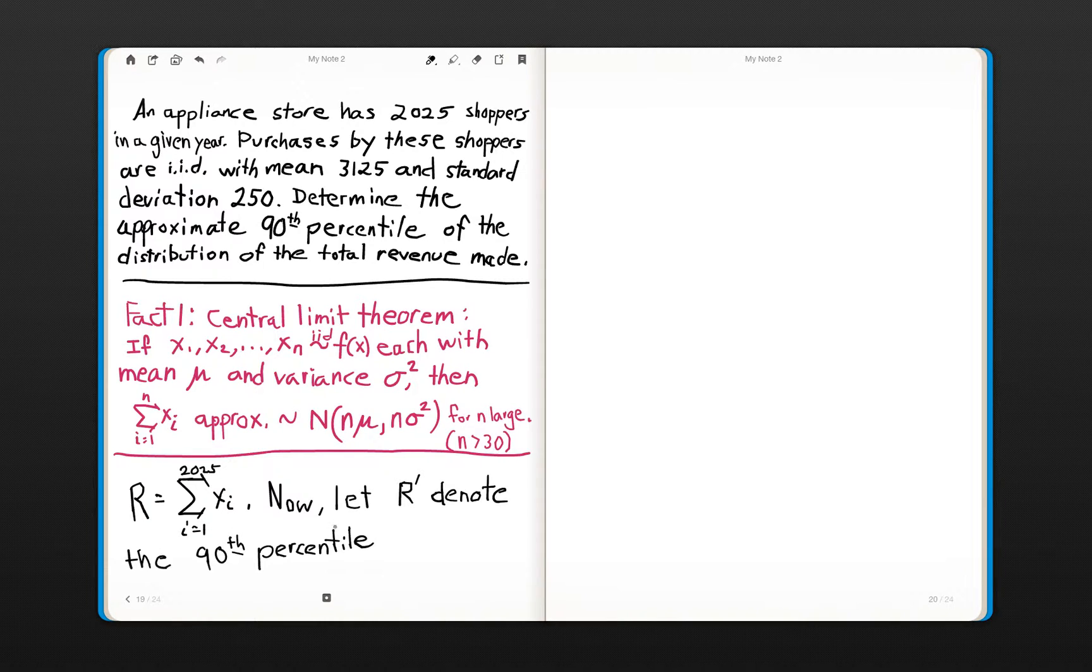We're going to define another variable, which is a constant called R', and we're going to let it denote the 90th percentile of R. What we're saying is that 90% of the revenue is going to be less than or equal to R', which is defined as the 90th percentile of the revenue.